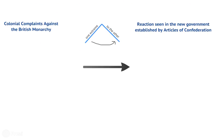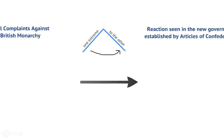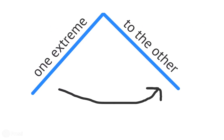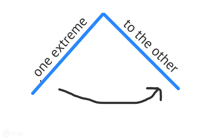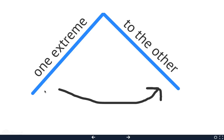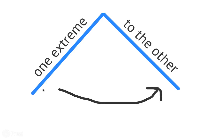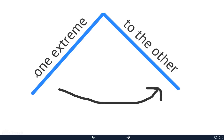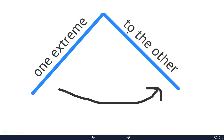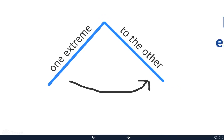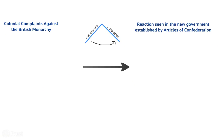The first thing we're going to look at is the colonial complaints against the British monarch. What ends up happening is that on one side we have a tyrant — someone who's abusing his powers to an extreme level — not letting the colonists go places, taking away their governments, and punishing them unfairly. The colonists react by going to the completely opposite side of things.